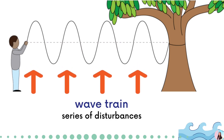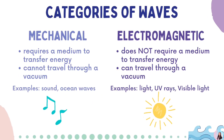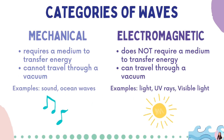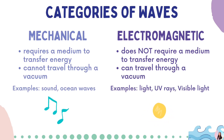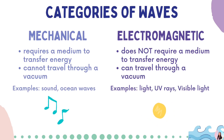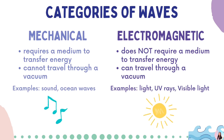Waves can be classified according to its categories. The first one is mechanical wave. This wave requires a medium to transfer energy and it cannot travel through a vacuum. Examples are sound and ocean waves.